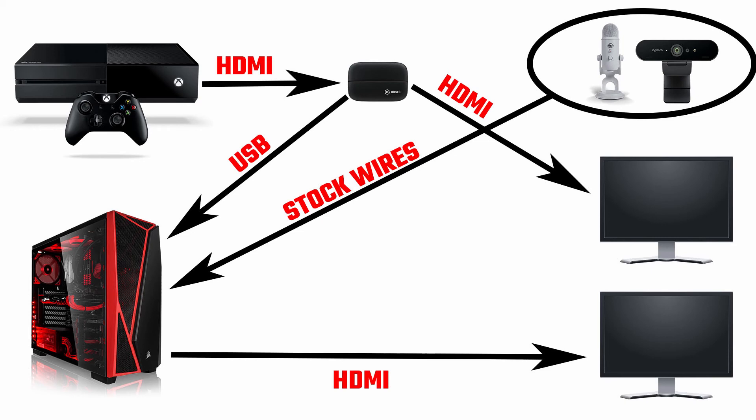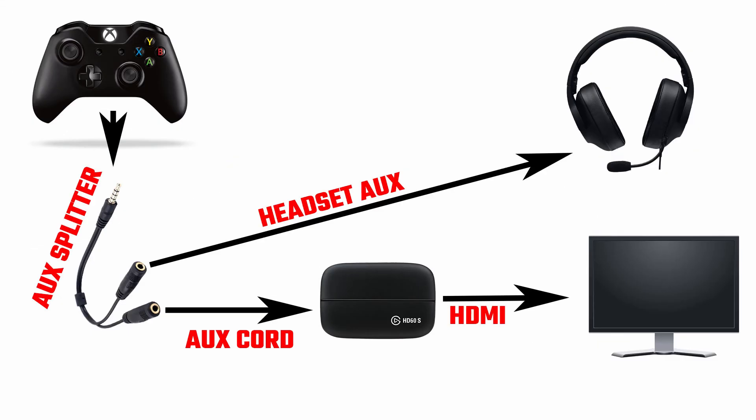To get game chat, you need an auxiliary splitter for your 3.5mm jack on your controller. You output from the controller to the splitter — one end goes into your headset and the other goes into your Elgato. You'll also need an auxiliary-to-auxiliary cable that plugs from the auxiliary splitter into your Elgato.